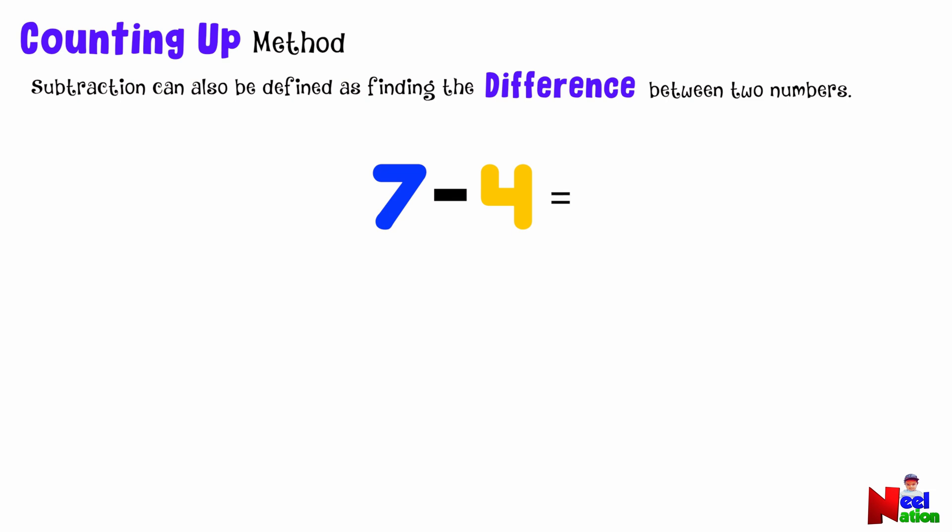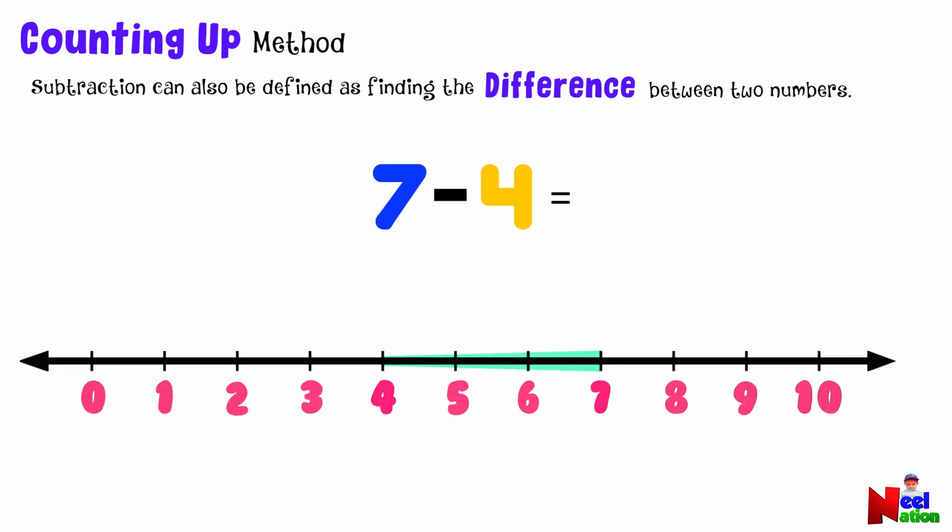Let's find the difference between 7 and 4, or 7 minus 4. In the counting up method, we find the difference by counting from the smaller number up to the bigger one. First, we identify the smaller number—it's 4. Now let's keep 4 in mind and count up to 7. We can use a number line to help us.